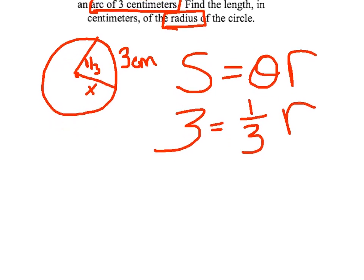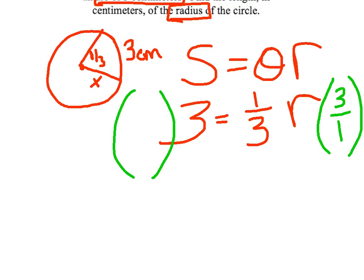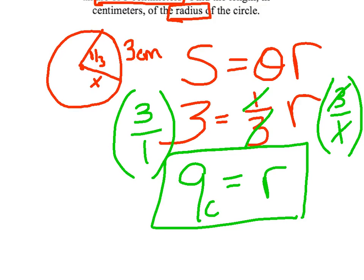I'm still using s equals theta r. This time I know s is 3 centimeters and theta is one-third, already in radians, and the question is what is r. Rather than dividing by a fraction, multiply each side by the reciprocal — multiply by 3 over 1. The threes cancel, and I'm left with r equals 9 centimeters.